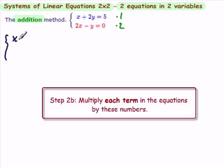So the first one we're multiplying by 1. It doesn't always work out so nicely. And the second one we're multiplying by 2. Each term, 2 times 2x is 4x, 2 times minus y is minus 2y. And 2 times 0, where we all make the mistake, is 0.